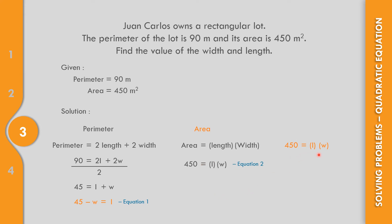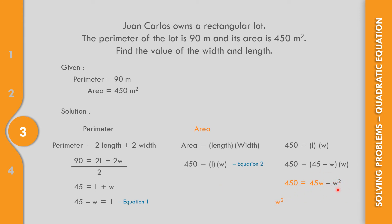So 450 equals L times W, and replacing L with 45 minus W: 450 equals (45 minus W) times W, which gives 450 equals 45W minus W squared. Moving everything to one side: W squared minus 45W plus 450 equals 0.